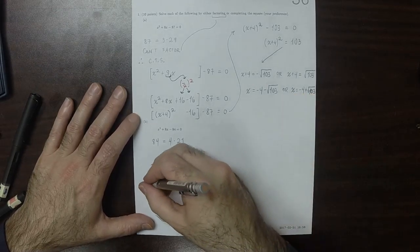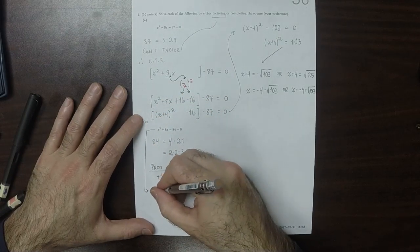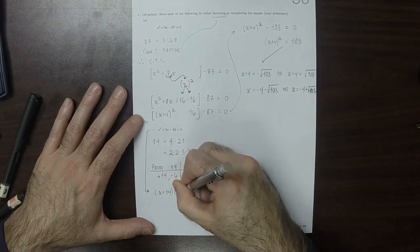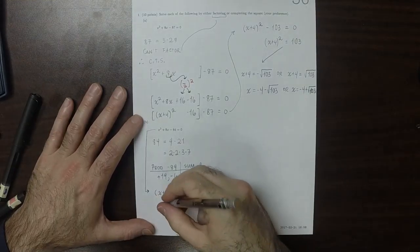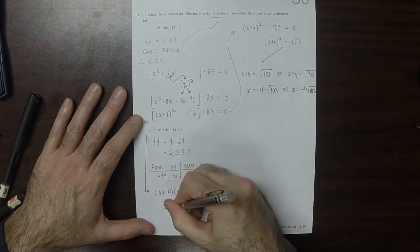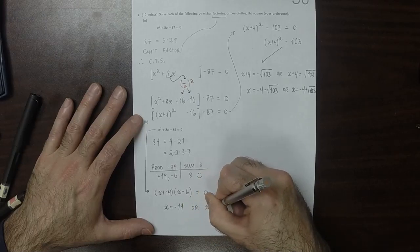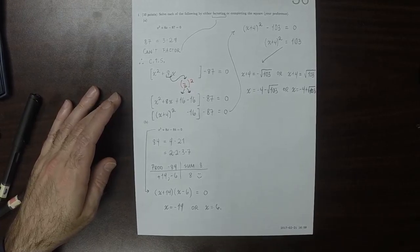So, that means that the equation factors to x plus 14, times x minus 6, equal to 0. So, x is negative 14, or x is 6. And that's the answer. Thank you. We'll see you in the Math.